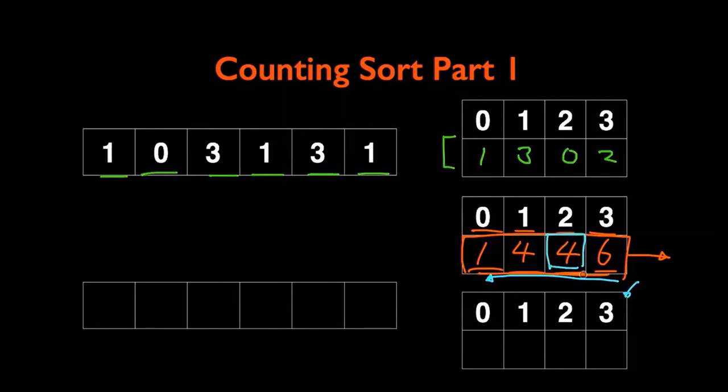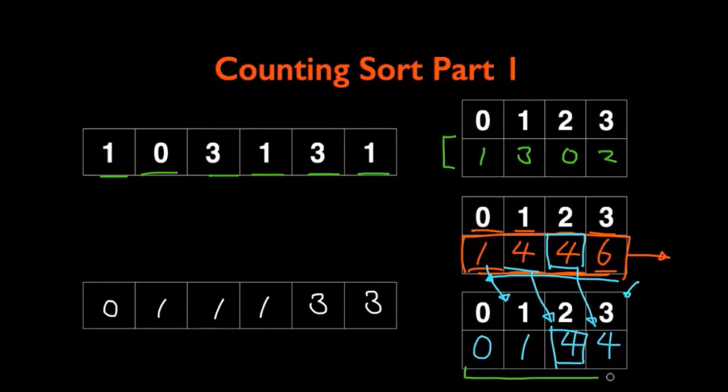At index 1 we will put the element which is at index 0, that is 1, and at index 0 we will put 0. The array we get in this final third step is the starting indexes for the range of numbers we are having, that is from 0 to 3.